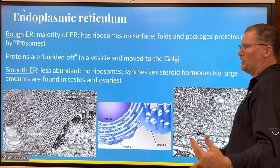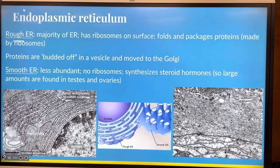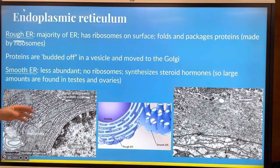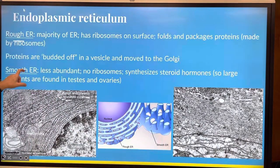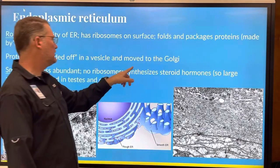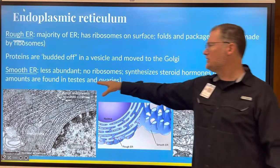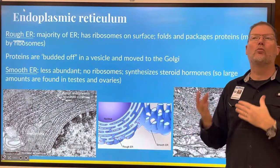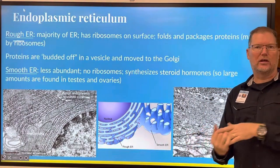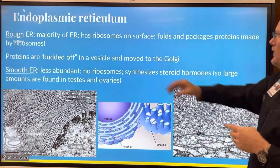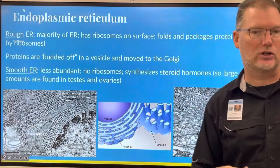Endoplasmic reticulum, there is the rough and the smooth. Remember, has ribosomes. Why? Rough. Looks rough. I don't know if it's actually rough. Probably not. And then the smooth does not. It synthesizes steroid hormones. That's why cells in the testes and the ovaries are going to have more SER, smooth endoplasmic reticulum, than other cells in the body. And then from here, the proteins are budded off and moved to the Golgi apparatus for packaging and delivery.